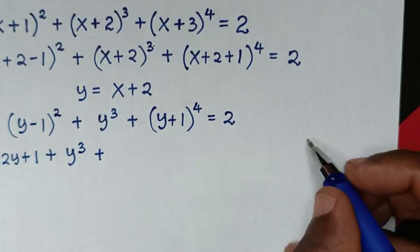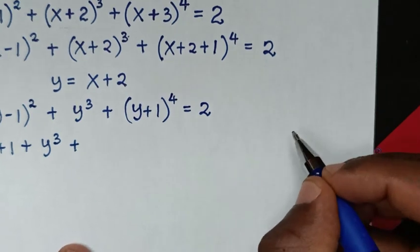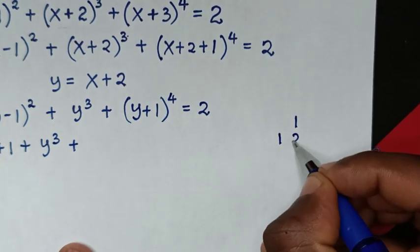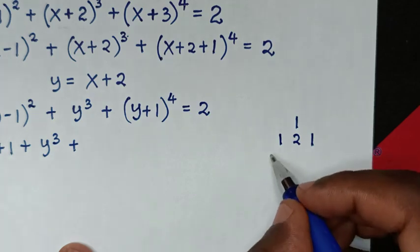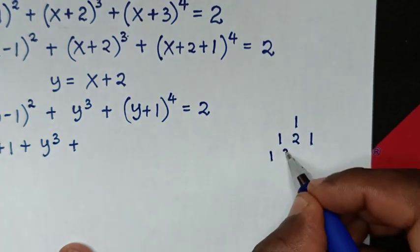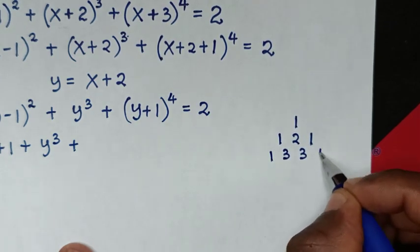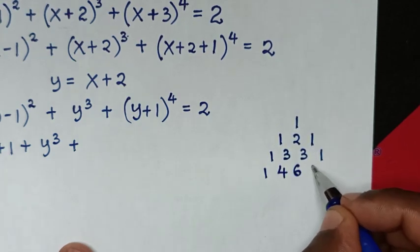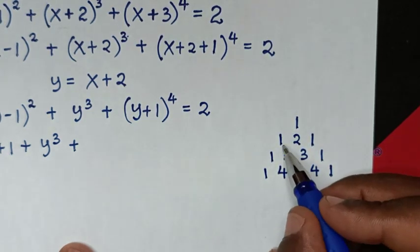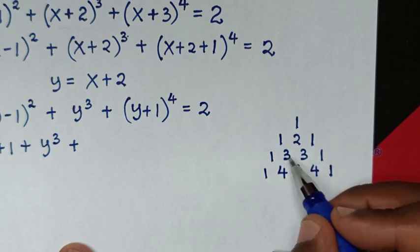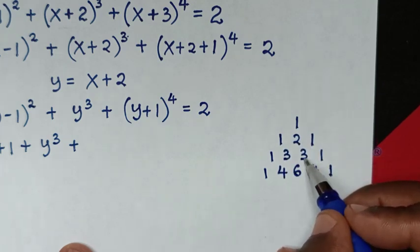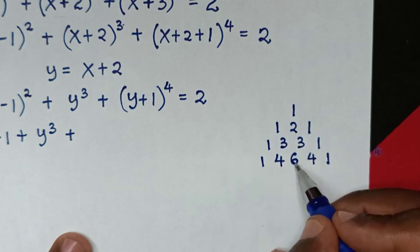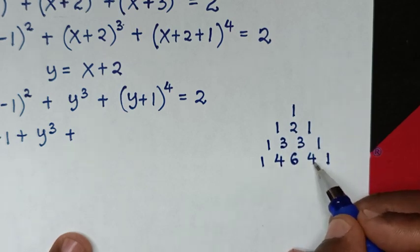From Pascal's triangle: the rows are 1; then 1, 2, 1; then 1, 3, 3, 1; then 1, 4, 6, 4, 1. We get these by adding adjacent numbers: 1+2=3, 2+1=3, then 1+3=4, 3+3=6, 3+1=4.